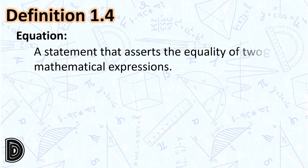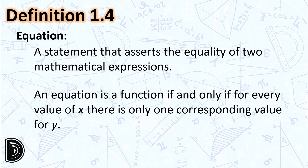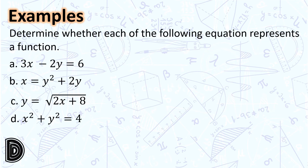Next, we have an equation. An equation is a statement that asserts the equality of two mathematical expressions. An equation is a function if and only if for every value of x, there is only one corresponding value for y. Let's have some examples. Determine whether each of the following equations represents a function: (a) 3x − 2y = 6; (b) x = y² + 2y; (c) y = √(2x + 8); and (d) x² + y² = 4.